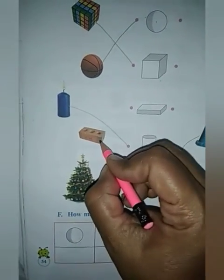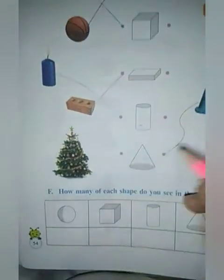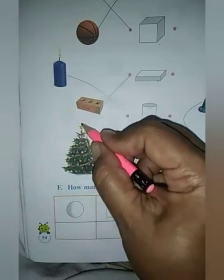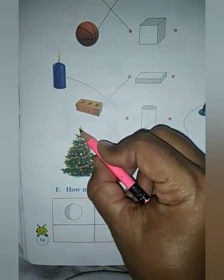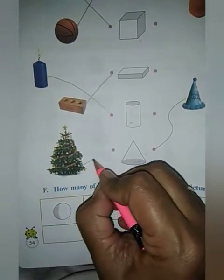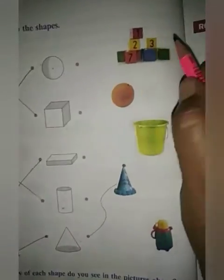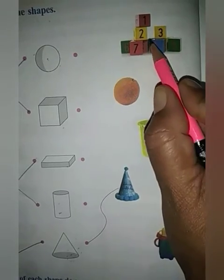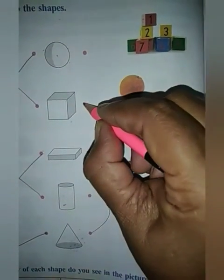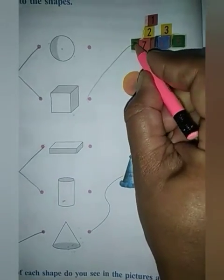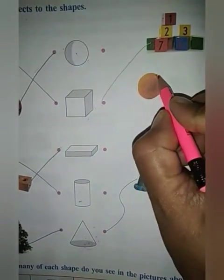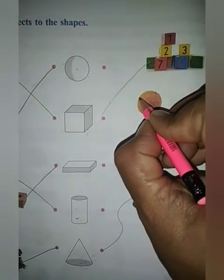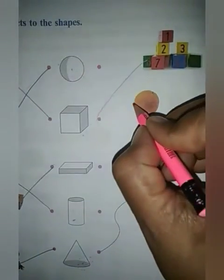Next one is a brick — so we will match it with cuboid. Now next one is a Christmas tree. You can see it is in the shape of a cone, so we will match it with cone. There are many boxes in the shape of a cube, so we will match them with cube. Next is an orange — it is in the shape of a sphere, so we will match it with sphere.